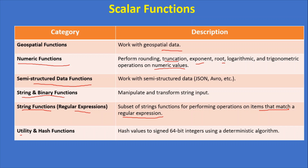The last category is utility and hash functions. These functions work on hash values to assign 64-bit integers using a deterministic algorithm, which means they will always generate the same value instead of randomly generating values.